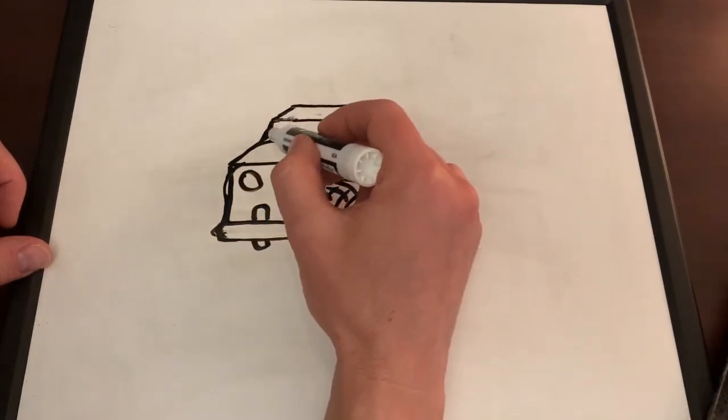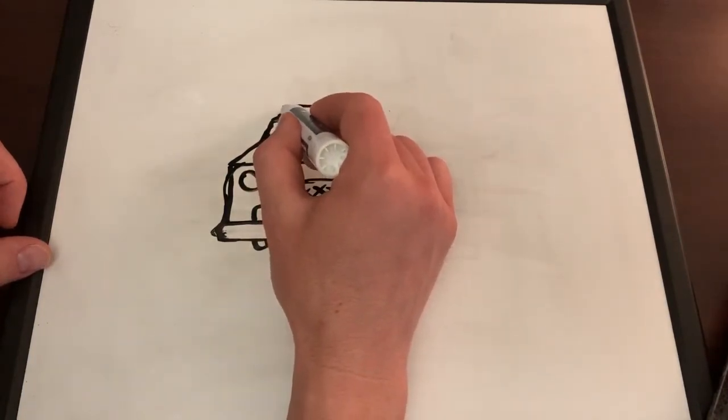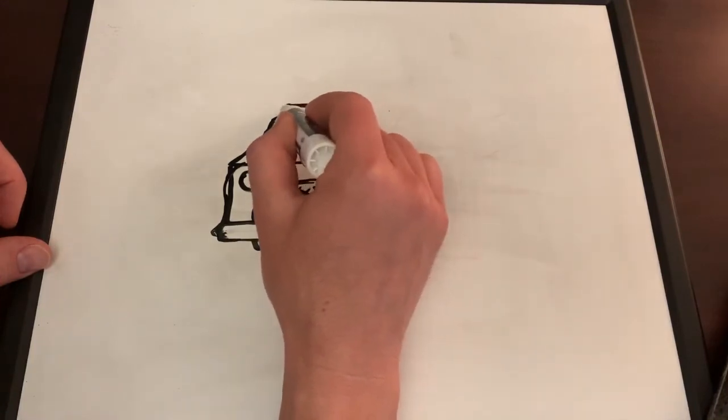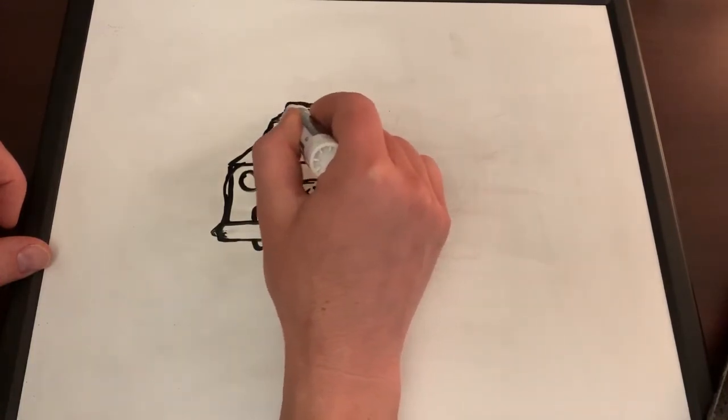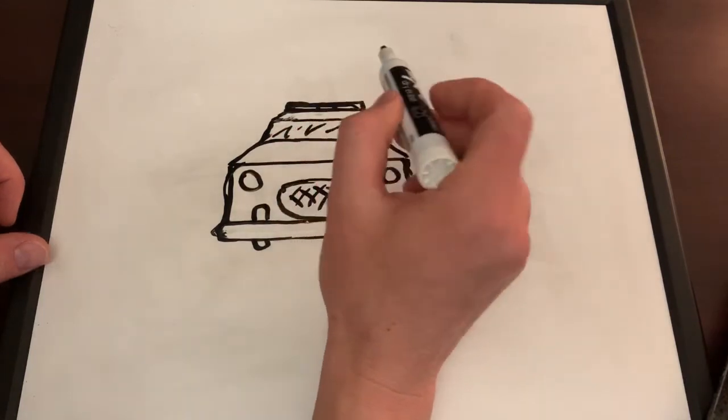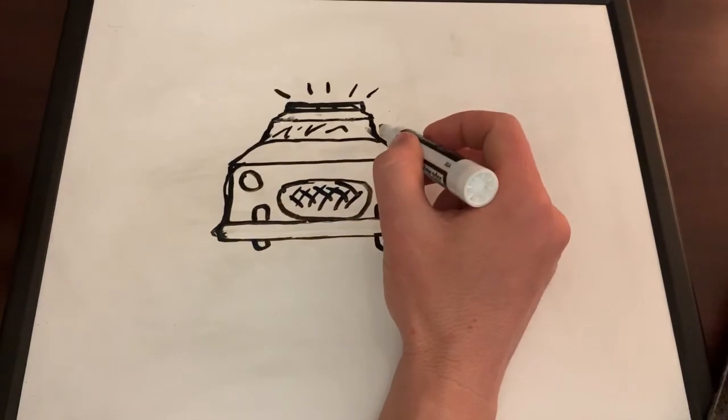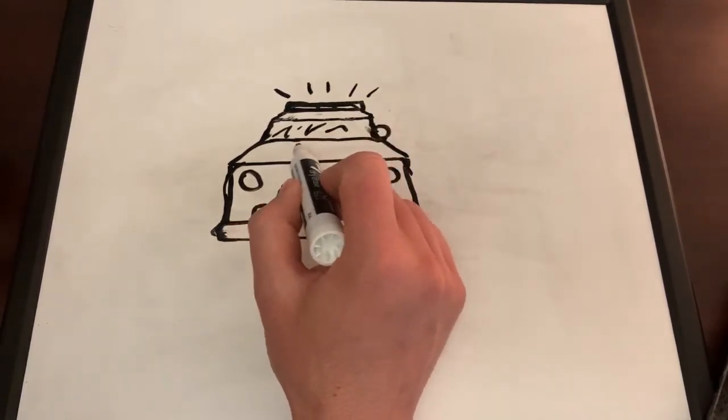Add some reflection to the glass. And now the light bar on top. Again, just make a square right on top going from those lines that you already drew for the roof. And you have your light bar. Then we can add some lines showing that the lights are on. And you can't have a police car without a spotlight, so draw a spotlight.